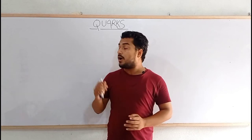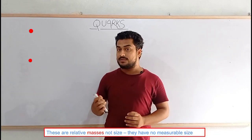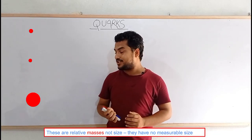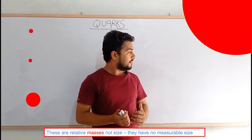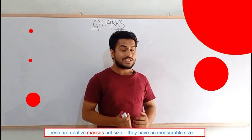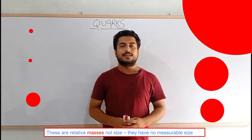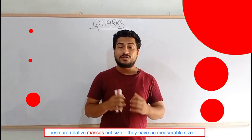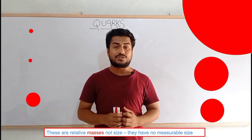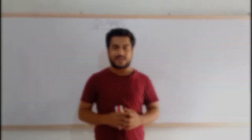There are altogether six types of quarks discovered so far. They are: up, down, strange, top, bottom, and charm quark. Now let's understand the different properties of these quarks.